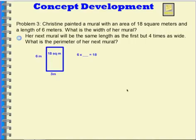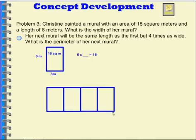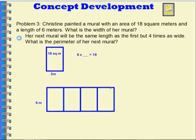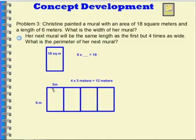Her next mural will be the same length as the first but 4 times as wide. What is the perimeter of her next mural? The mural is going to be the same length, which is 6. But it's 4 times as wide, so I would need 4 three-meter sections to find the width. I can say 4 times 3 meters — 3 meters, 3 meters, 3 meters, 3 meters — 4 times 3 meters is 12 meters. So the width of this mural would be 12 meters.